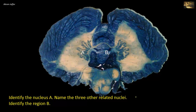Identify nucleus A, name the three other related nuclei, and identify region B. The nucleus is the dentate nucleus. It has an irregular outline and can be easily distinguished even in unstained sections. It appears somewhat darker than the surrounding white matter. It is the most lateral of the cerebellar nuclei. The other cerebellar nuclei are located medial to it: the emboliform, globose, and fastigial nucleus, which is the most medial. The dentate nucleus is the largest of the four. Axons of Purkinje cells terminate on these nuclei, and almost all output from the cerebellum originates from the cells in these nuclei.